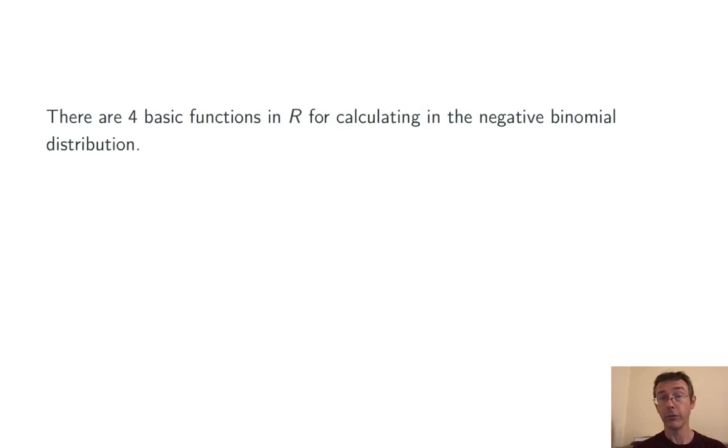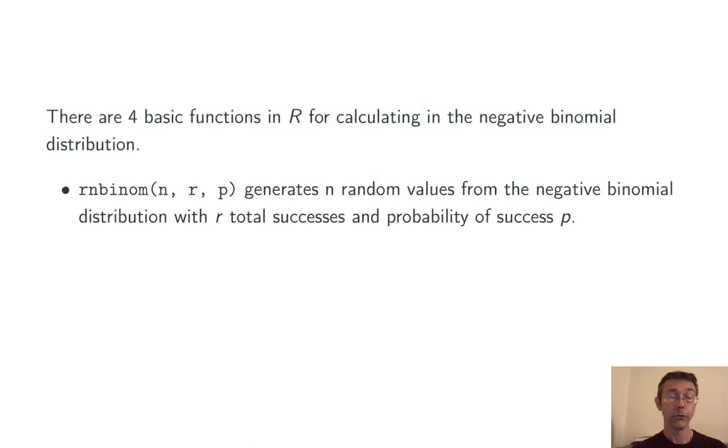There are four basic functions for computing in R when you're looking at the negative binomial distribution. The first is rnbinom, which is just your random number generator. It's going to generate the requested number of values from a negative binomial distribution with the given parameters, r total successes and p the probability of success on any individual trial.